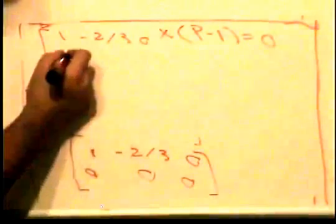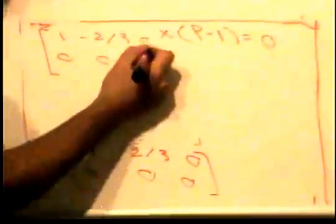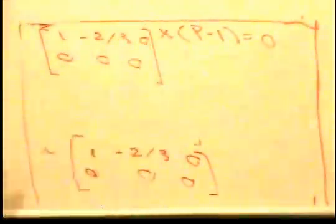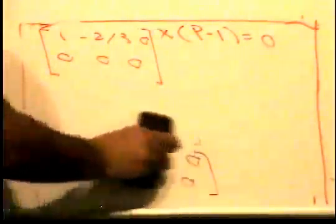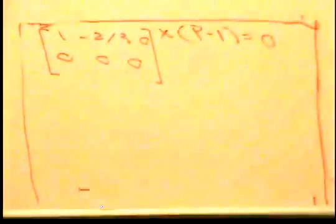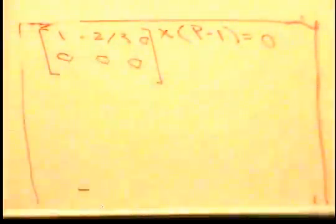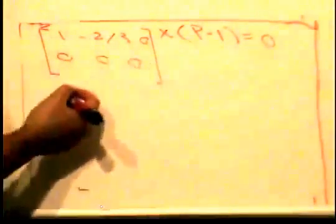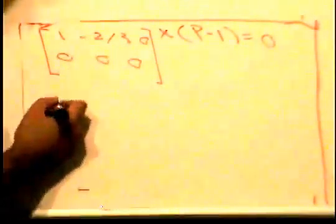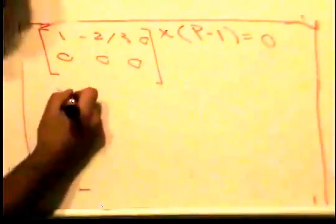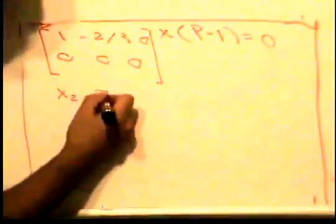We row reduced it and got [1, -2/3, 0; 0, 0, 0]. From here we have to find the basis for the column space. To do that, we write this in vector form. As we can see, x2 is free—it's a free variable—and x1 equals 2/3 x2.